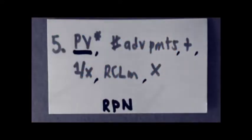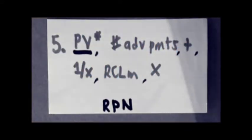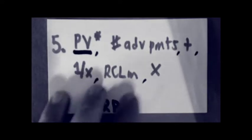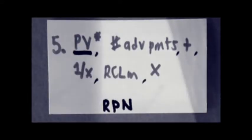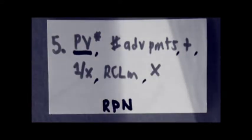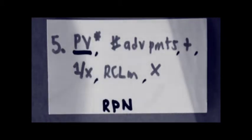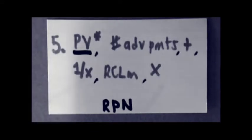Should you have a calculator that operates in reverse Polish notation, such as the Hewlett-Packard 12C, you'll use this method. With the present value on the X stack, you're going to add the advanced number of payments A, hit the plus key, hit the reciprocal key, recall the contents stored from step 3, and hit the multiply key. This is going to be your result — your monthly lease payment.